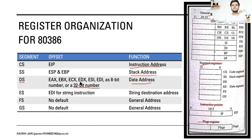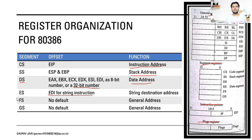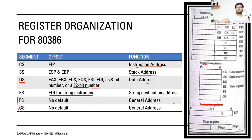Then we have ES, which stores the string destination address, and the offset is EDI for string instructions. FS and GS don't have any default offset but are general address registers. This was an overview of how registers are organized in the 80386.